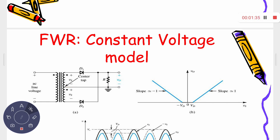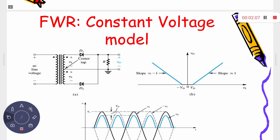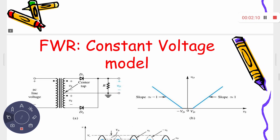Whenever this terminal experiences some voltage, the other terminal will not experience the same kind of voltage. If this peak is at Vm, then the other terminal is at minus Vm. This point is connected to ground, so the voltages are represented as Vs to minus Vs.